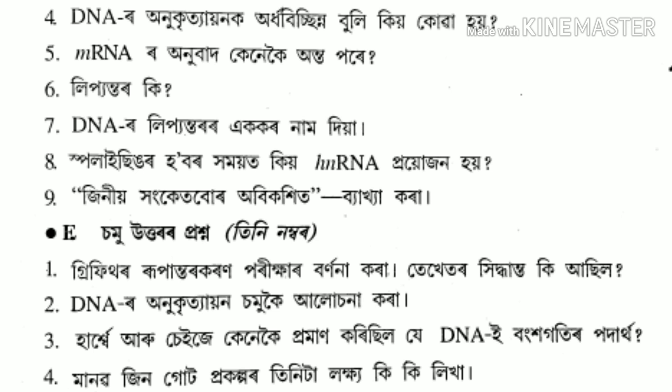Question number 7: Write the unit of transcription of DNA. Question number 8: Why is hn-RNA important in splicing? Question number 9: Explain that the genetic codes are degenerate.